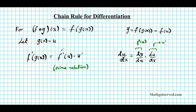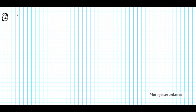So f prime of u corresponds to dy/du, and u prime corresponds to du/dx. These two formulas are telling us exactly the same thing. Some people prefer the prime notation and some prefer the Leibniz notation — feel free to use whichever you like. Now for Question 2, we have: find y prime, which is the same as dy/dx, for y equals the square root of x squared plus 3x.